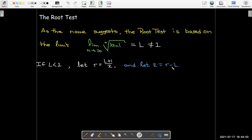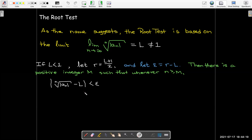And so we'll let epsilon be r minus l. So from the definition of the limit, there's going to be a big positive integer m such that whenever n is greater than or equal to m, the distance between our limit value and the value of the terms of our sequence is going to be smaller than epsilon.